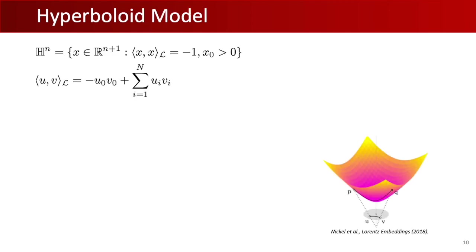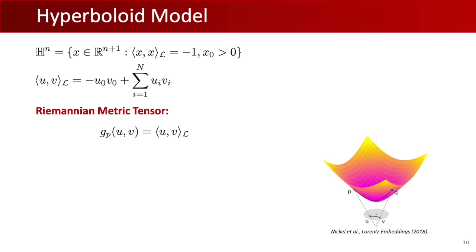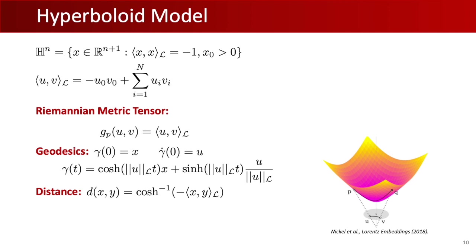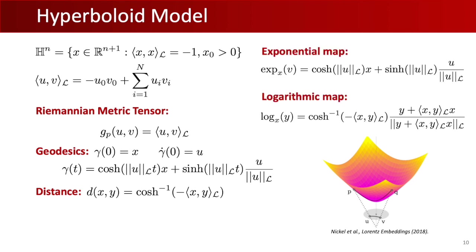Before describing the method to learn hyperbolic graph embeddings, we need some tools and formulas. We work with the hyperboloid model of hyperbolic space because the formulas are relatively simple and similar to spherical geometry, except spherical angles become hyperbolic angles. The hyperboloid model represents n-dimensional hyperbolic geometry where points lie on the forward sheet of a two-sheeted hyperboloid in n+1 dimensional Minkowski space — meaning points must have their Lorentz product equal to one. The Riemannian metric is the Lorentzian inner product, which allows deriving geodesics, distances, and closed-form exponential and logarithmic maps.